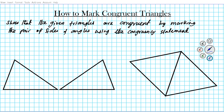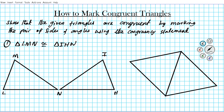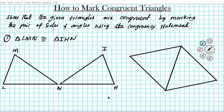The instruction for the examples is as follows: we have to show that the given triangles are congruent by marking the pair of sides and angles using the congruency statement. For problem number one, the congruency statement is triangle LMN is congruent to triangle IHN. Let's go ahead and mark the triangles — this is L, M, and N, and then this is I and H.